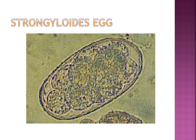Strongyloides: the egg has a 2-, 4-, 8-cell stage. The larva has a notched tail — like scissors clipped out a tip in the center of the tail. It has a cuticle and is parthenogenic — it can reproduce by itself. It can also travel to the lungs, so sputum is an optional specimen. It can cause malabsorption syndrome.